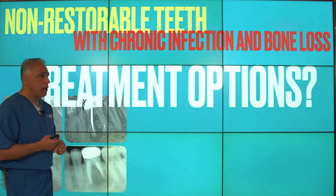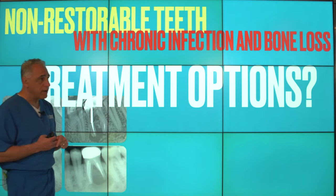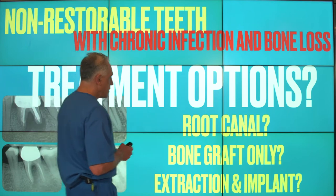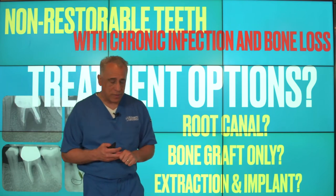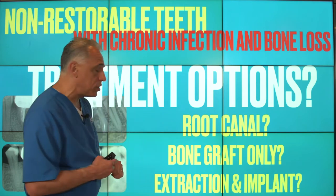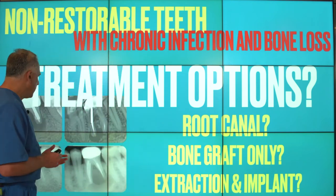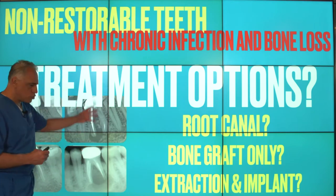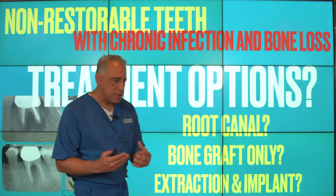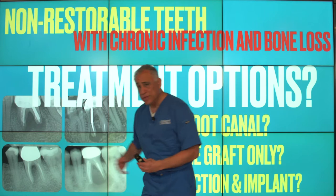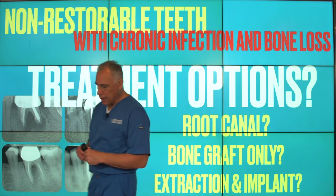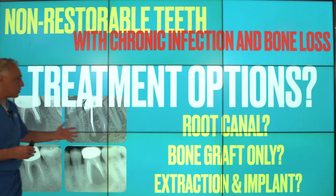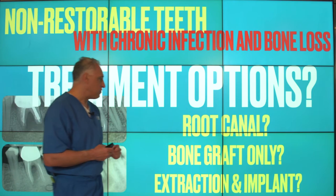What are the treatment options for managing patients with chronic infection and bone loss? There are basically three options available. The first is performing a root canal or endodontic treatment. Root canals can be a very effective treatment for teeth with infection if the size of the infection is relatively small, if there are no fractures or cracked roots, and if the tooth can be predictably restored. Root canal is a viable option in those cases and can lead to a great outcome with the infection resolving effectively over time.